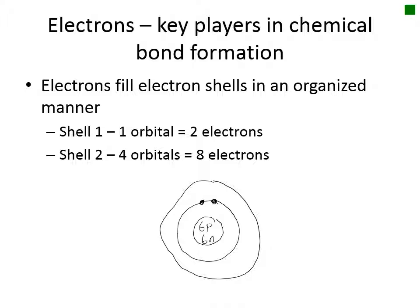The first shell is now full and cannot hold any more electrons, but carbon still has four more electrons. We move to the second electron shell, which contains four orbitals. Each orbital can hold two electrons, so the second shell can hold a total of eight electrons. A single electron is added to each orbital before any one orbital is filled with two. The orbitals are represented by the different poles of the electron shell, so the remaining four electrons are filled in one, two, three, four — providing carbon with its six total electrons.